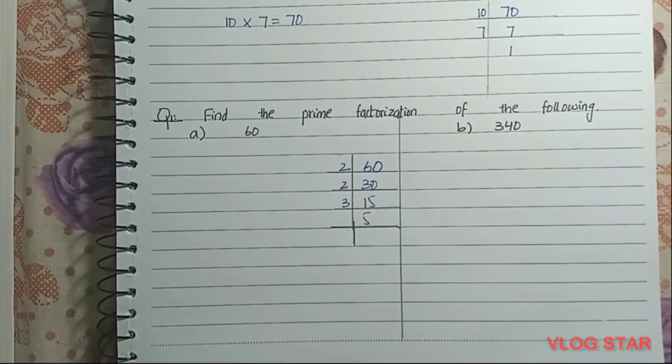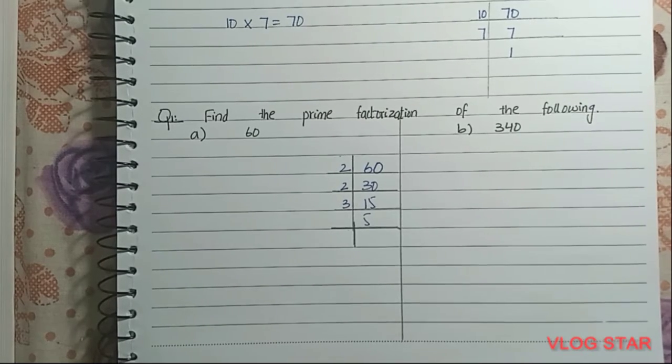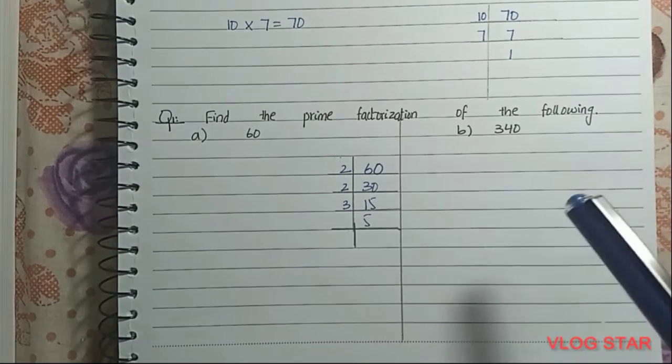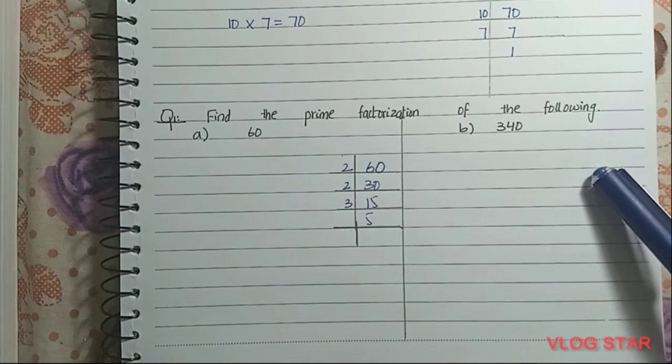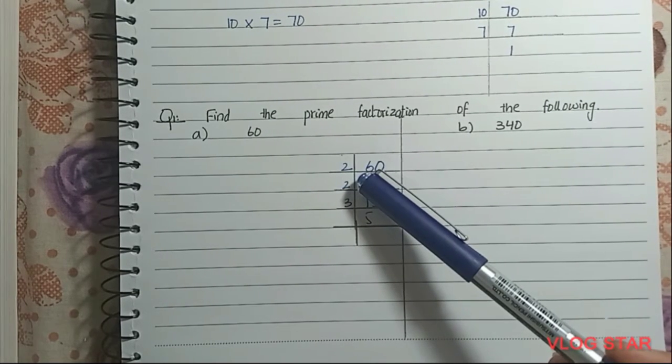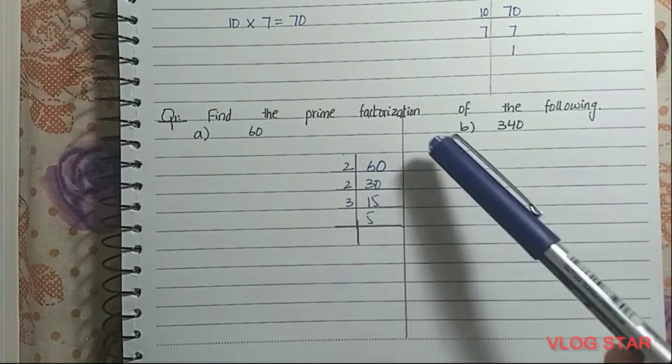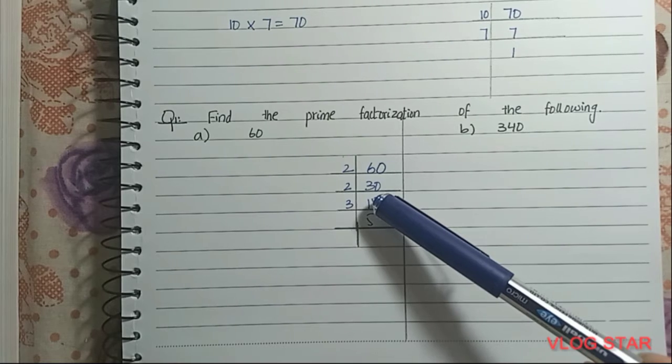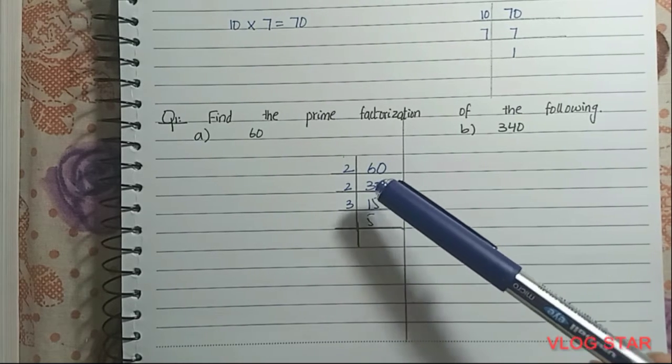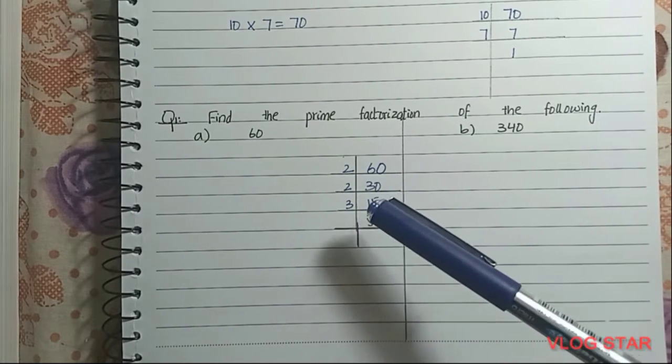Let's check our answers. For the prime factorization of 60, we know that 60 is an even number and 2 is a prime factor, so we write 2. Then we divide 60 by 2 and get 30. 30 is also even, which means it's also divisible by 2, so we divide 30 by 2 and get 15.